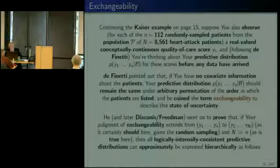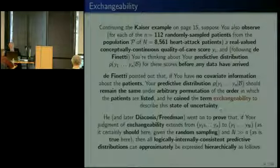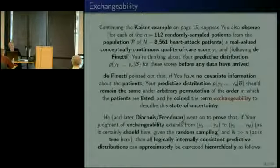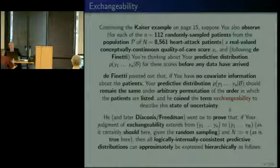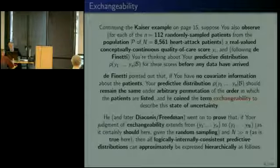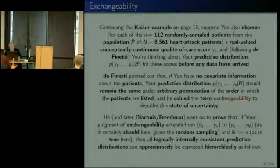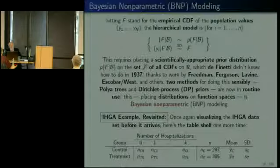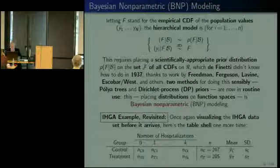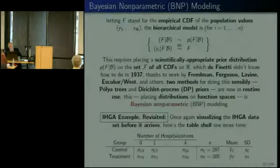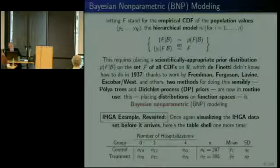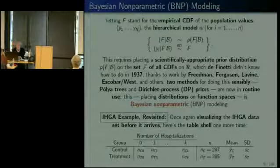It says the following: if you are prepared to extend your judgment of exchangeability from Y_1 to Y_n, to Y_1 to Y_N — a much bigger number — and if capital N is a lot bigger than little n, which is certainly true here (8,561 versus 112), then you can show that all logically internally consistent predictive distributions have to be expressible hierarchically. If you could have done a complete census of the entire population, all 8,500-odd of them, you could create a cumulative distribution function from those values — call it capital F.